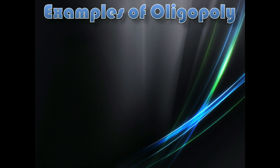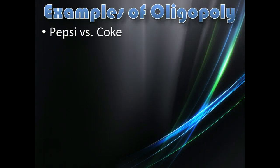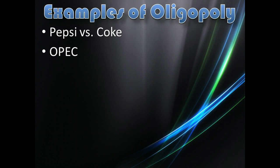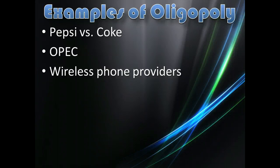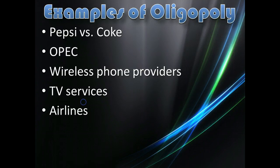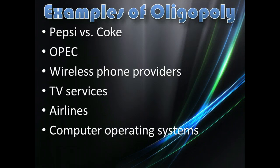Some examples of oligopolies include Pepsi versus Coke, where there are basically two major producers of soft drinks in this country — a few firms, more than one but less than many. The OPEC cartel of oil-producing countries is an example, where a few countries control the oil market. Wireless phone providers, cable television, airlines, and computer operating systems are also oligopolies. We'll talk about how we can identify and classify oligopolies in a minute.